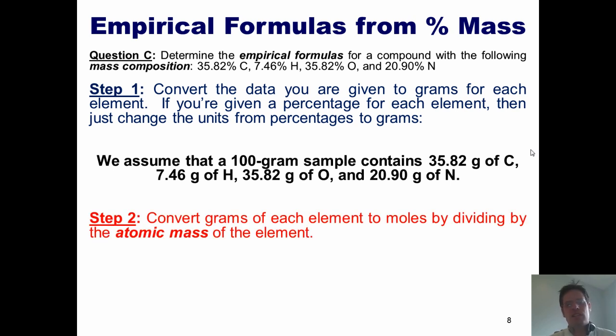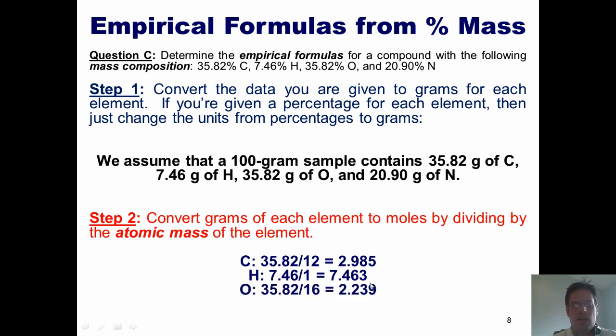Step two, convert these numbers by dividing every single one of them by the individual atomic mass for its corresponding element. 35.82 divided by the atomic mass of carbon is 2.985. 7.46 divided by the atomic mass of hydrogen, which is 1, is 7.46. 35.82 divided by 16, the atomic mass of oxygen is 2.239. And 20.90 divided by 14, the atomic mass of nitrogen is 1.493. Congratulations, we're done with step two.